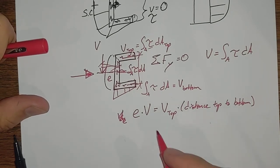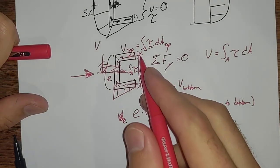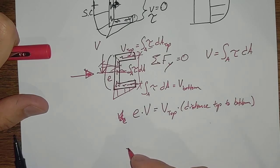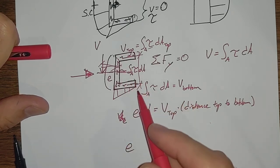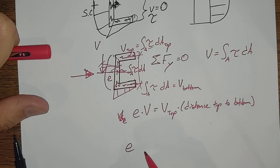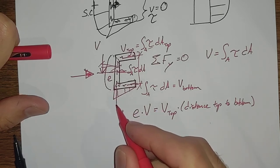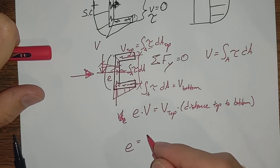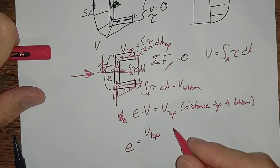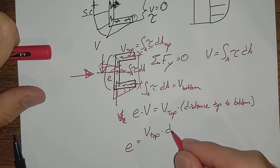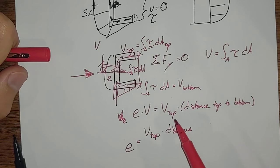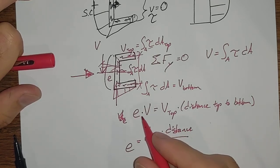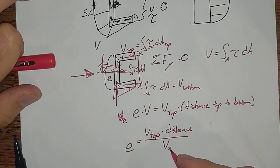Distance, top to bottom. And that's to the midpoint of each one of these. So dividing through, that is going to give us the eccentricity off to this V force from the mid-thickness of the flange. Eccentricity is equal to V top times our distance, we'll just shorten that distance, divided by V applied.